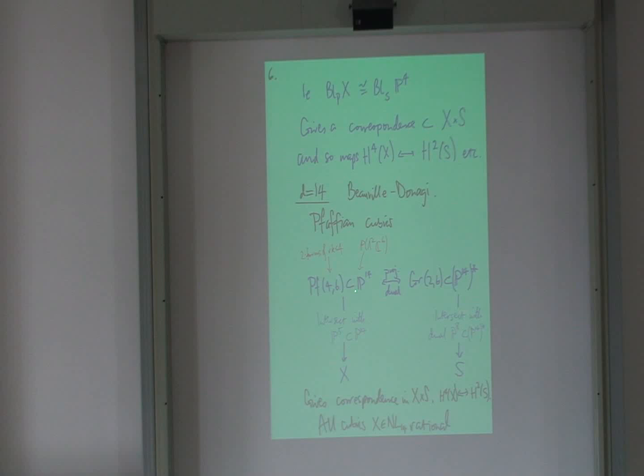So you can see the P14 here to be the two forms on C6, and then you look at the two forms which have low rank. Think of two forms as a skew symmetric matrix, generically rank 6. Look at the guys with rank 4 or less.